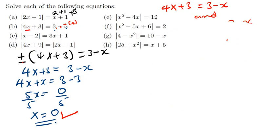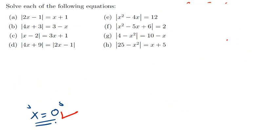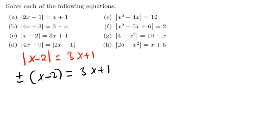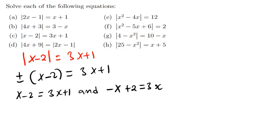Now let's go to part C — the same concept. Pause the video and try to solve it. We have the Modulus of x plus 2 equals 3x plus 1. Opening the modulus: plus or minus (x plus 2) equals 3x plus 1. Multiplying by positive: x plus 2 equals 3x plus 1. Multiplying by negative: negative x minus 2 equals 3x plus 1.